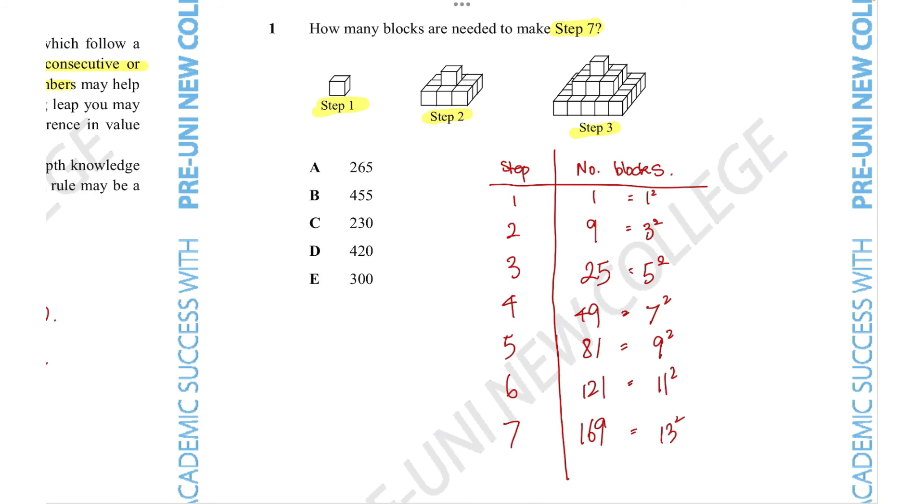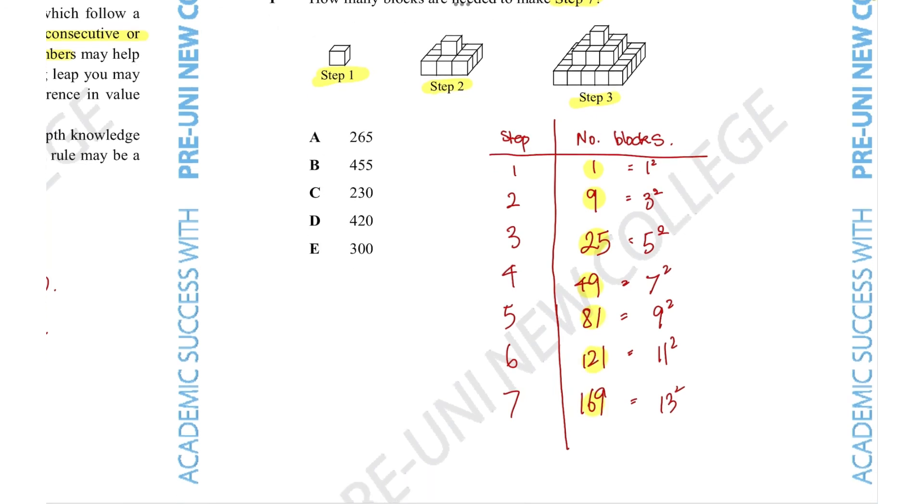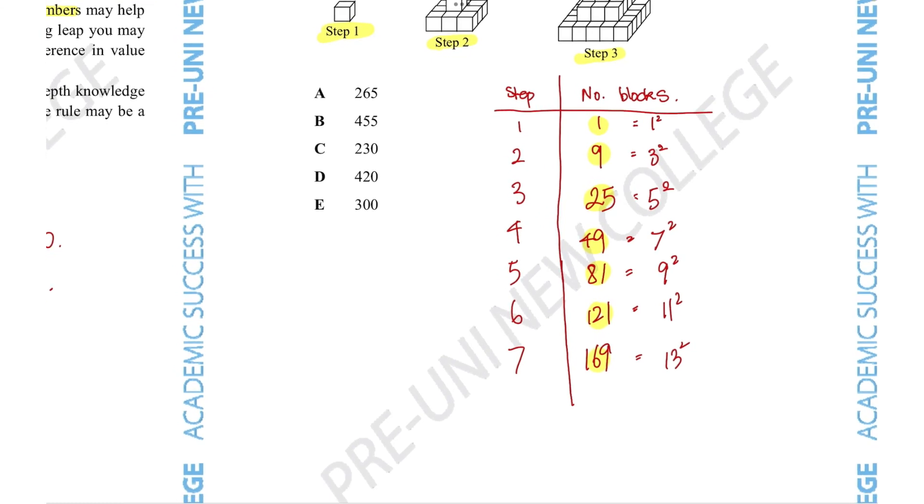Now that we know how many blocks are needed per step, the question wants us to figure out how many you need to make the entire thing. Remember, we figured out the pattern by looking at each row, so to figure out step 7 actually requires us to add all these numbers together. 1 plus 9 plus 25 plus 49 plus 81 plus 121 plus 169, the grand total equals 455.